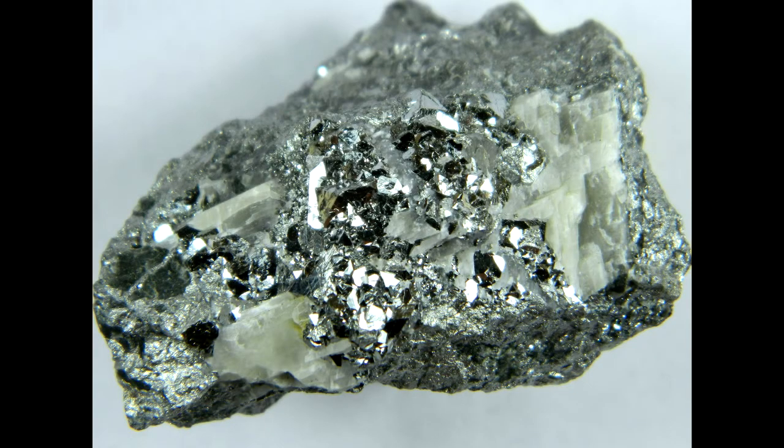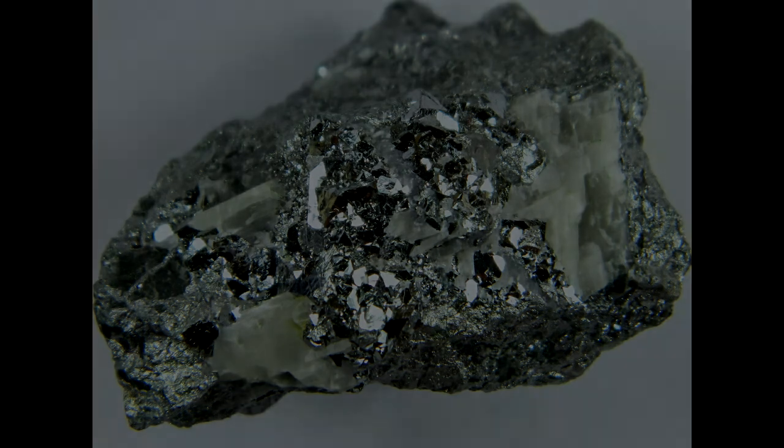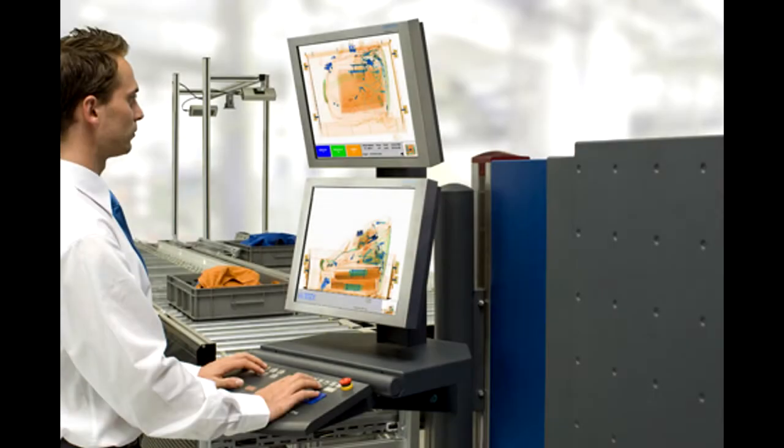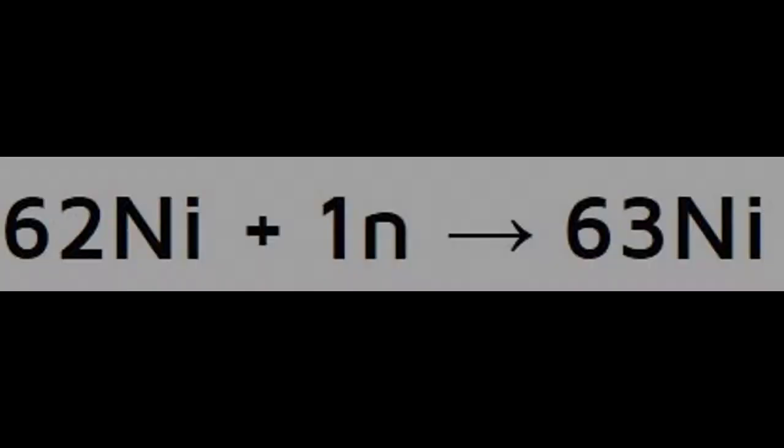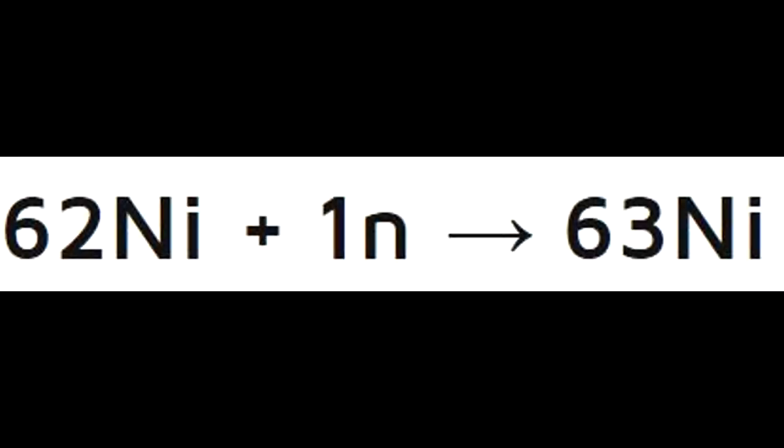Nickel-63 is a radioactive isotope mostly used in industry for the detection of explosives. Unlike many other isotopes, it is not produced as a fission product, but is actually the result of neutron capture in Nickel-62.